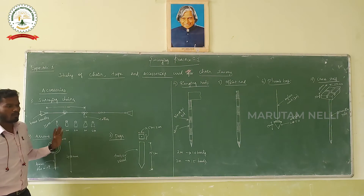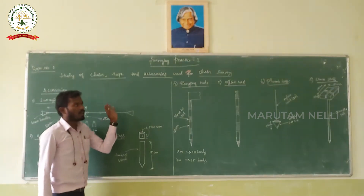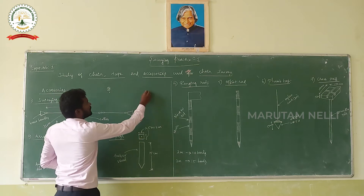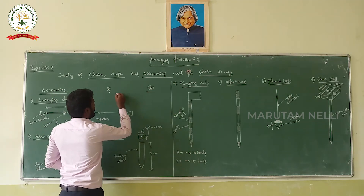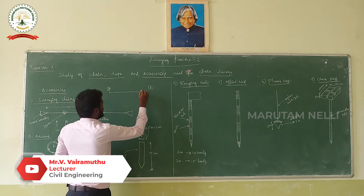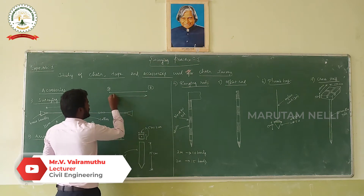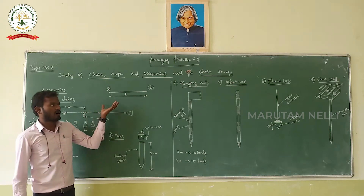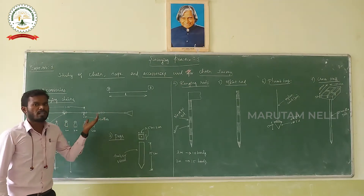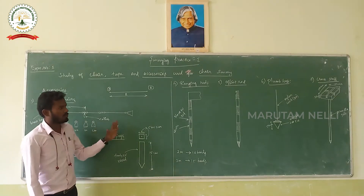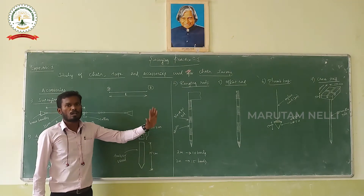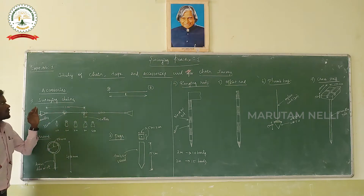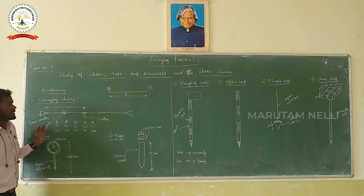The chain survey is one method. It means you have points and you are able to measure distance. Because we are able to measure each point, we are able to measure in the same way, and then we will be able to carry out the measurement. The first step is to measure the distance.